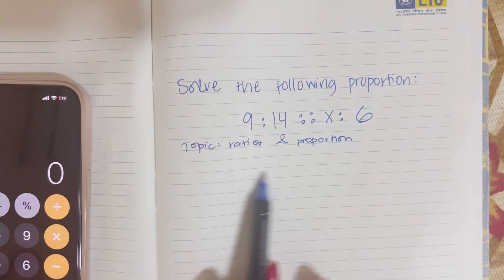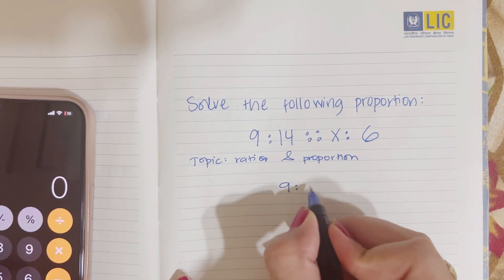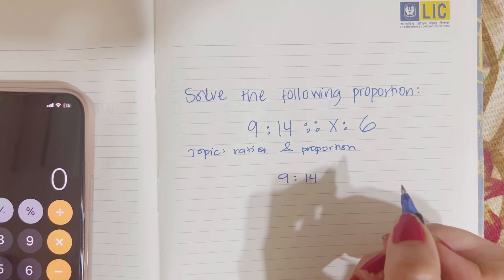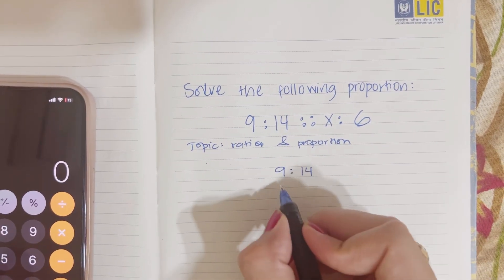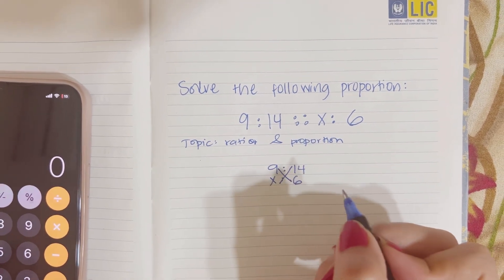This is ratio and proportion. We have these numbers. What we do is 9 is to 14 and the other one is x is to 6. Again, you just multiply across.